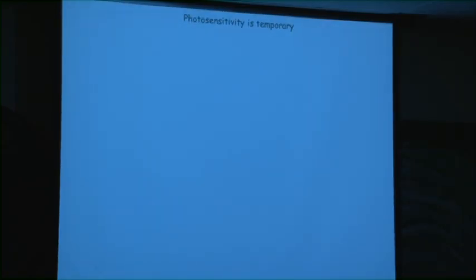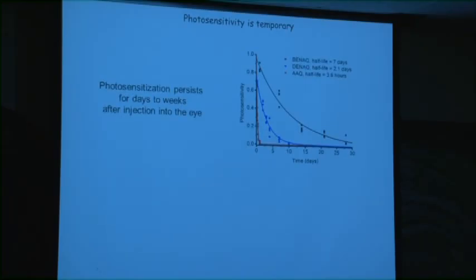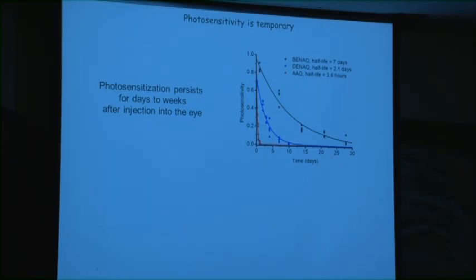These compounds are essentially drugs, so they will be metabolized and wear off over time. DNAC lasts much longer than AAQ. The AAQ effect in the eye wears off within 12 to 24 hours after intravitreal injection. DNAC wears off over about a week — the half-life is a couple of days. BNAC can persist in the vitreous for several weeks.